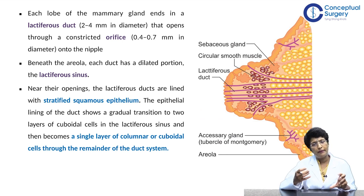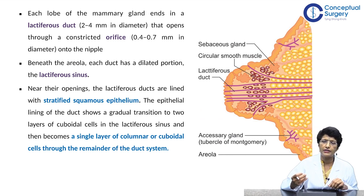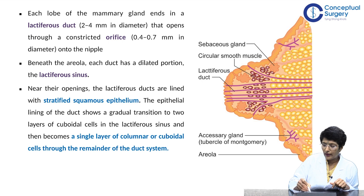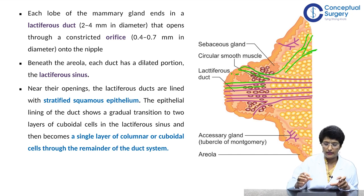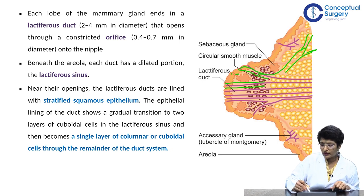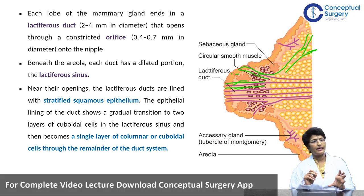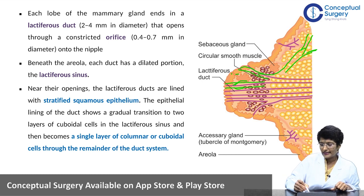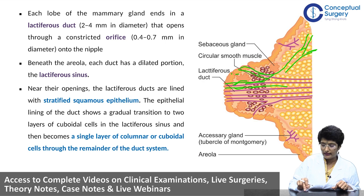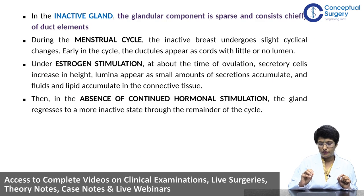Each lobe of the mammary gland ends in a lactiferous duct. About 20 lactiferous ducts open into the nipple, arborizing into several generations of duct tubes going into the breast. Each duct broadens just before it opens up into a lactiferous sinus. In the lactiferous sinus there are two layers of cuboidal cells, and as it goes deeper into the breast it is lined by only a single layer — although this is not of direct clinical consequence, you must know it.